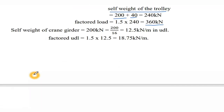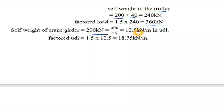The self-weight of crane is 200 kN. The factored UDL from crane self-weight is 200 divided by 16 = 12.5 kN/m, factored to 18.75 kN/m. The self-weight of rail is 300 N/m = 0.3 kN/m, factored to 0.45 kN/m.